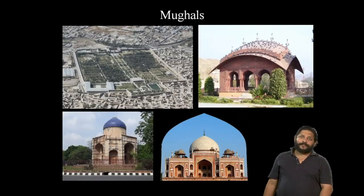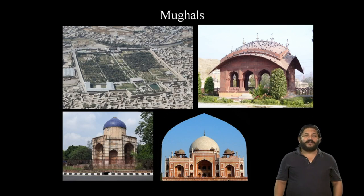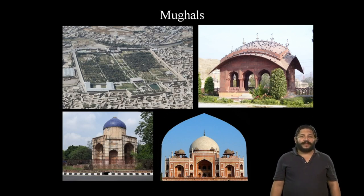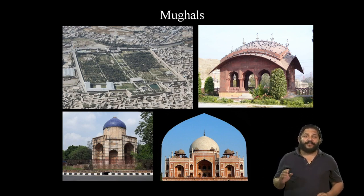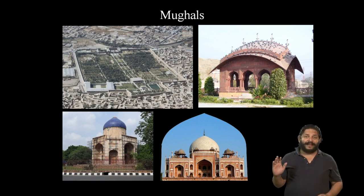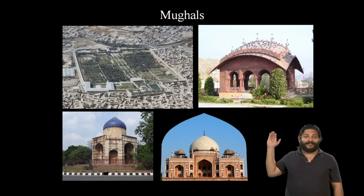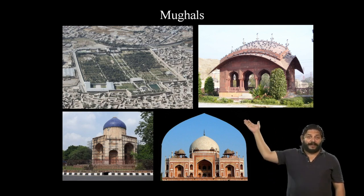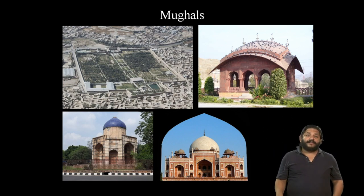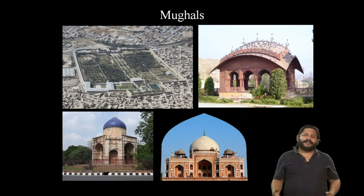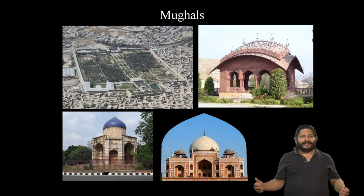We started off the week with looking at the Mughals — who they were, where they came from, what their sources of inspiration were, and how their architecture evolved through 200 years of being in India and being Indian. The Mughals, when they first arrived, as we saw with the Bagh-e-Babur, were heavily influenced by their Central Asian roots, choosing to lay out extensive gardens.